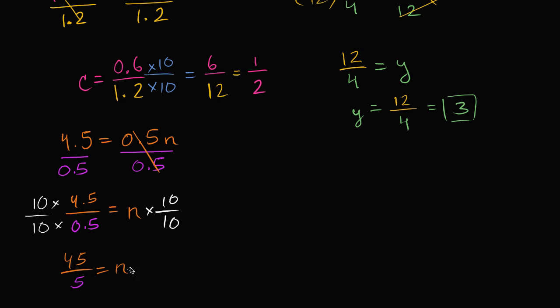But notice, n times 10 over 10, well, that's still going to just be n. So I'm not violating this principle of whatever I do to the left-hand side, I do to the right-hand side. You can always multiply one side by 1, and you can do that as many times as you want. The same way you could add 0 or subtract 0 from one side without necessarily having to show you're doing it to the other side, because it doesn't change the value.